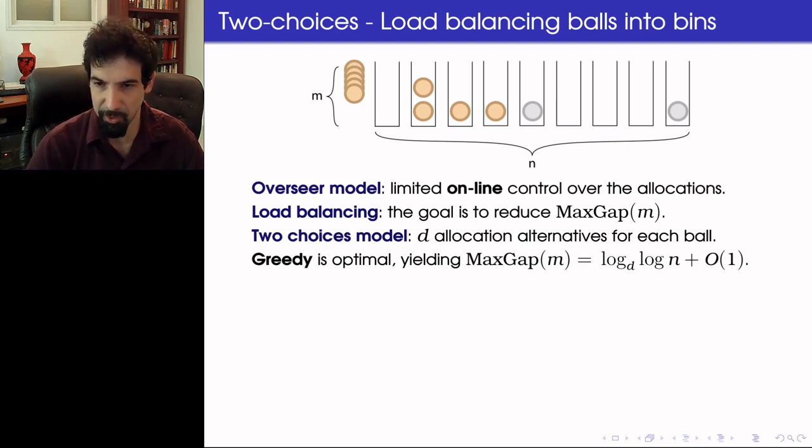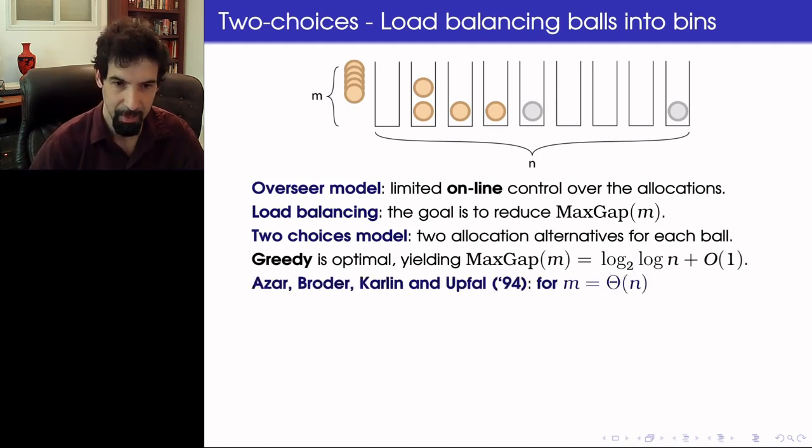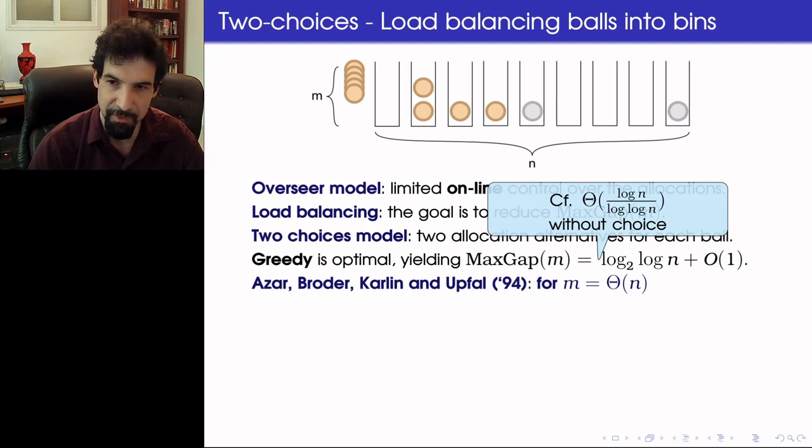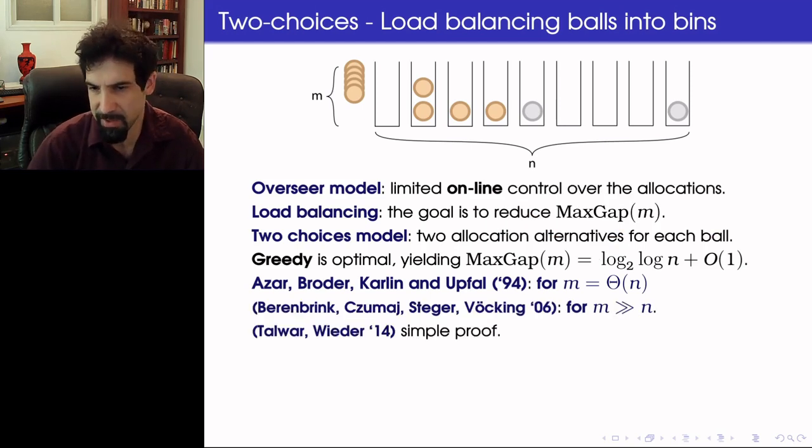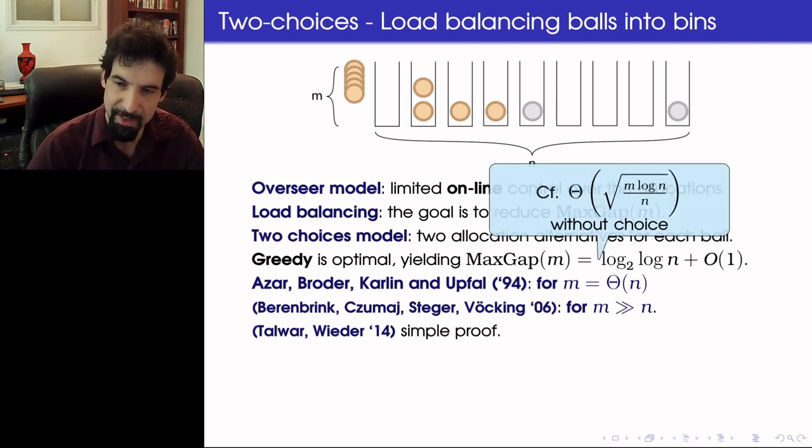In this case, with two choices, the maximum gap after allocating M balls is log₂ of log N plus big O of 1. And if we are giving d allocation alternatives for each ball, rather than 2, we do not see a significant improvement. It only changes the maximum gap by a constant, from log₂ log N to log_d log N. This result for the case M of order N is due to Azar, Broder, Karlin and Upfal from 1994, and it already achieves an exponential improvement, compared with the log N over log log N we've seen before. But it is even more astonishing for M greater than N, where previously we've seen maximum gap which is of order square root M log N over N, so growing with M polynomially, and now it does not depend on M at all. This result is due to Berenbrink, Czumaj, Steger and Vöcking from 2006, and there's a simpler proof and quite intuitive one by Talwar and Wieder from 2014.